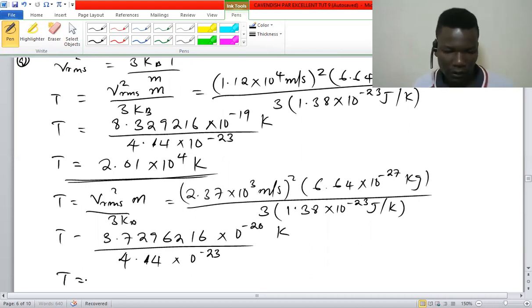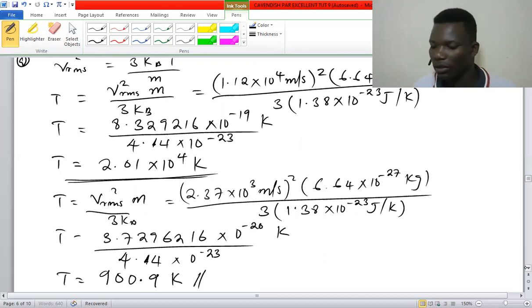This constant will still give us 900.9 kelvin, so that is going to be the temperature.